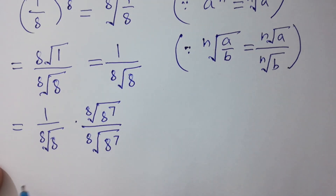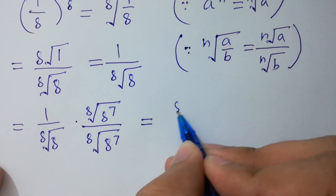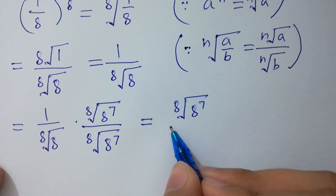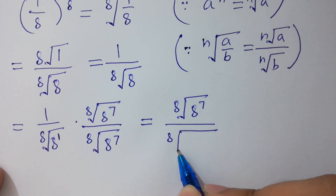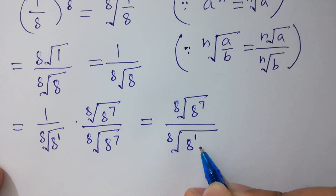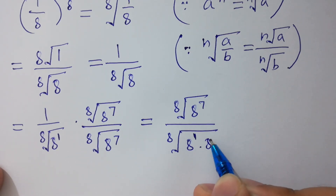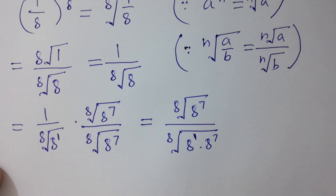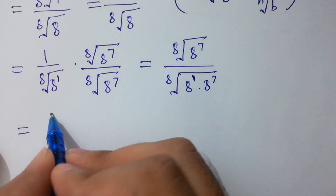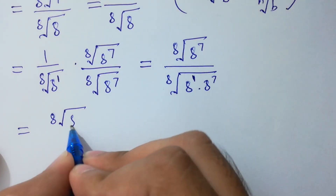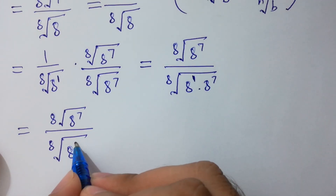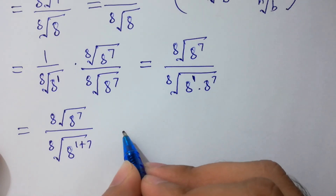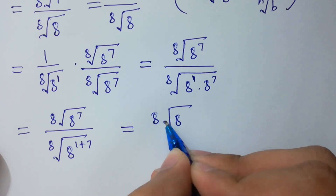Let's simplify here. We can write the 8th root of 8 to the power 7 over 8 to the power 7. Since the base is the same, powers are added. So we can write the 8th root of 8 to the power (1 plus 7), and 1 plus 7 equals 8.